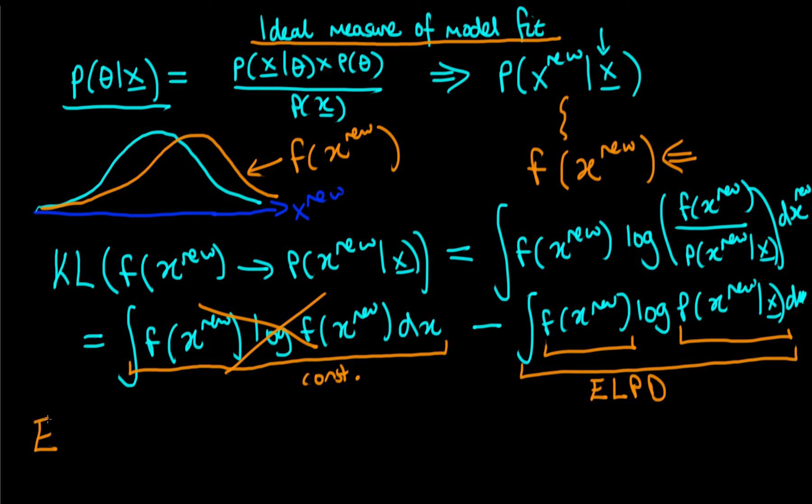Okay, so why have I called this second term the expected log predictive density? Well, the idea is that essentially we're integrating with respect to F of X new. So in other words, we're working out the expected value of the second term here. So we're working out the expected value under the true data generating process F of log of P of X new given X.